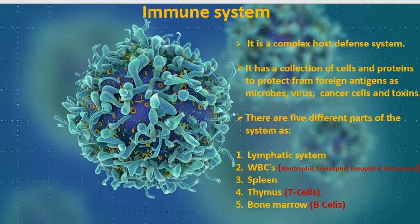The spleen is the largest organ in the lymphatic system and acts as a blood filter. It controls the amount of red blood cells and blood storage in the body, helps to find infection, and helps to clear microorganisms and particulate antigens from the bloodstream.